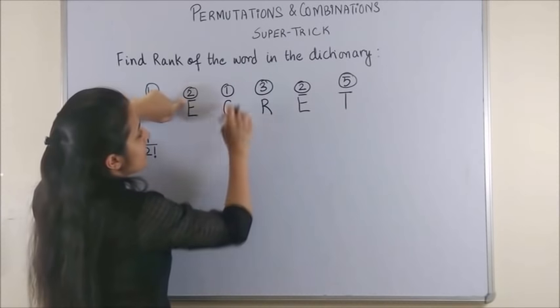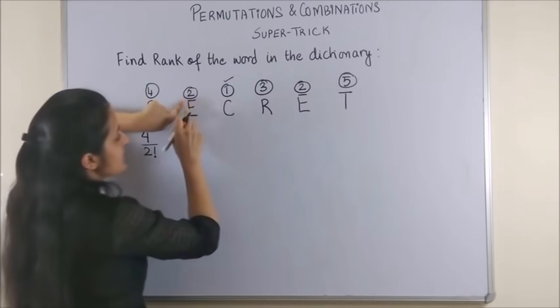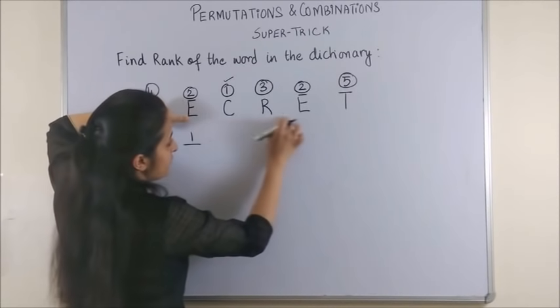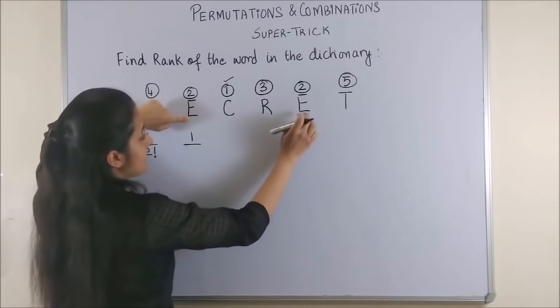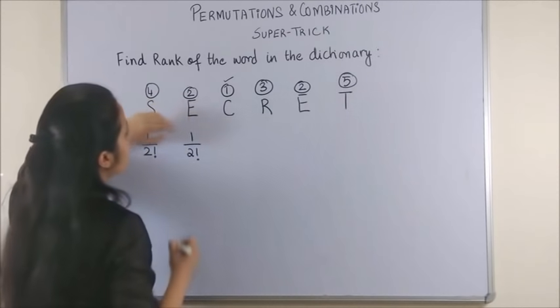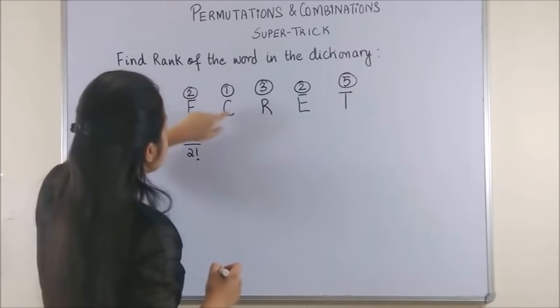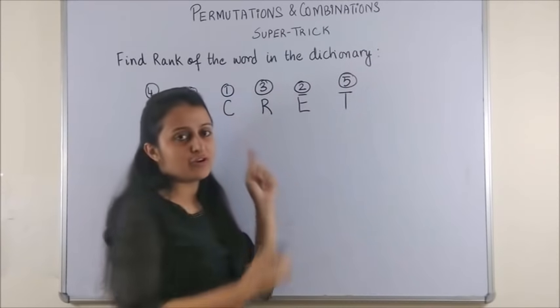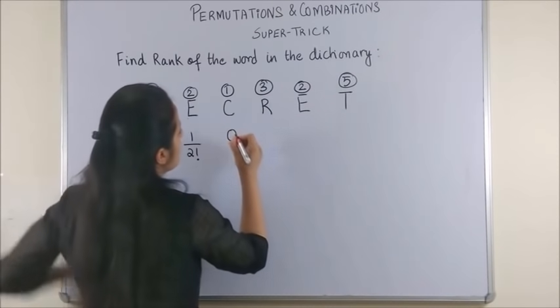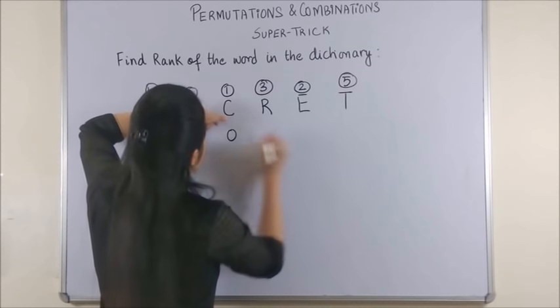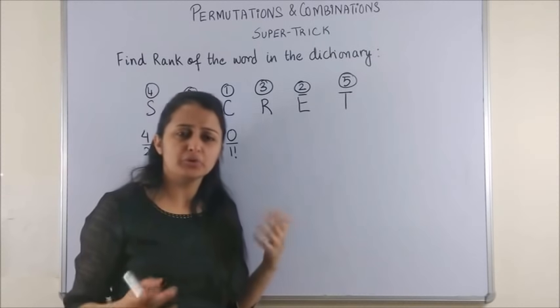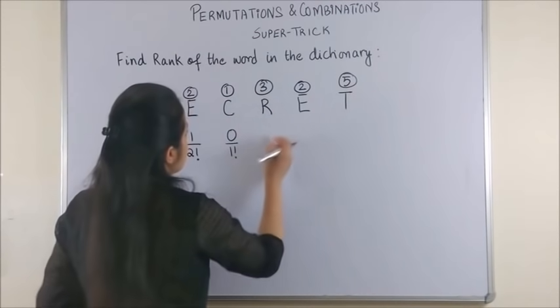Next, for E, there is only 1 alphabet which has a rank lower than 2. So I write 1 and now including this E, if you look at the right side, there is again E occurring twice. So, upon 2 factorial. Next, when I reach C, there is no alphabet which has a rank lower than 1. So this is simply a 0. And including this C, all the alphabets are occurring only once.